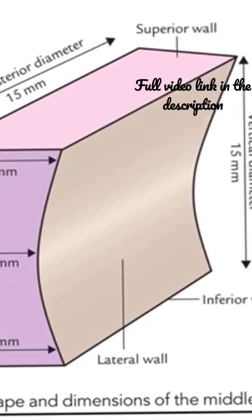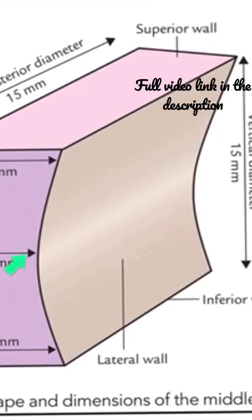Next, we will see about the measurements. The vertical and the anteroposterior diameter are 15 mm each. When you take the transverse diameter, it is 6 mm at the roof, 2 mm opposite to the center of the tympanic membrane, and 4 mm at the floor.